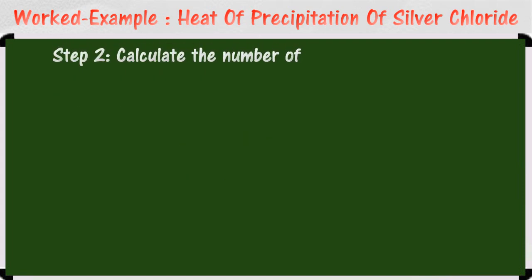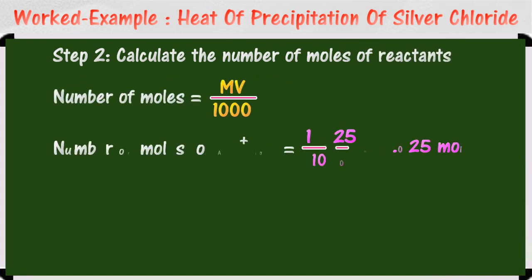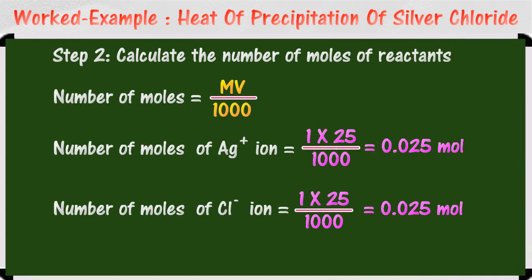Second step is to calculate the number of moles of each of the reactants, silver ion and chloride ion. Next, write down the ionic equation.